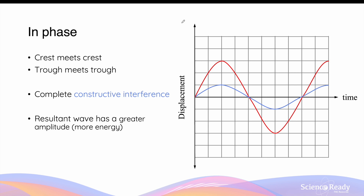Understanding the phase difference between multiple waves is very important in determining the effects of wave superposition. Waves are described as in phase with each other when the crests meet each other and the troughs also meet each other. As we previously discussed, this is where the superposition will result in complete constructive interference.